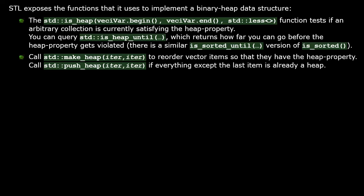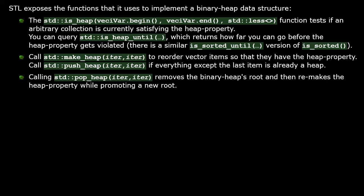Calling make_heap will reorder vector items so that they will have the heap property. Call push_heap if everything except the last item is already a heap. Calling pop_heap first removes the heap's root and then remakes the heap property while promoting a new item to the root.